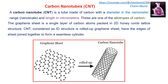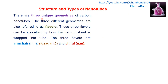A carbon nanotube is a tube made up of carbon with diameter in the nanometer range and length in micrometers. These are considered as one of the allotropes of carbon. The graphene sheet — a single layer of carbon atoms packed in a two-dimensional honeycomb structure — when rolled up, produces a carbon nanotube.